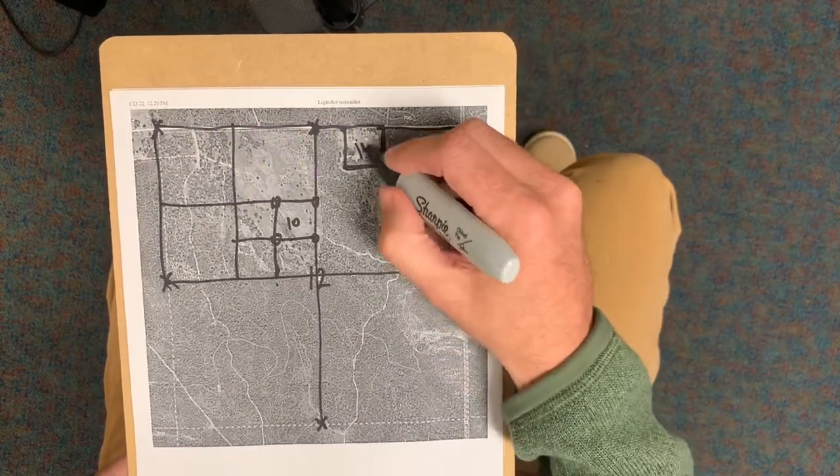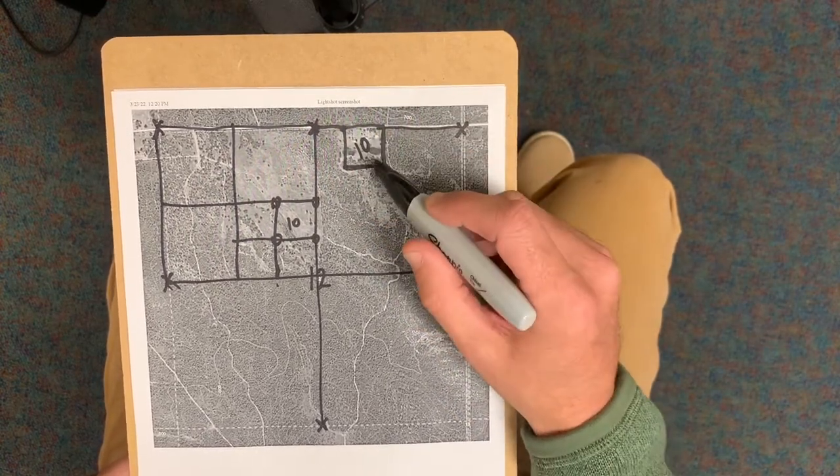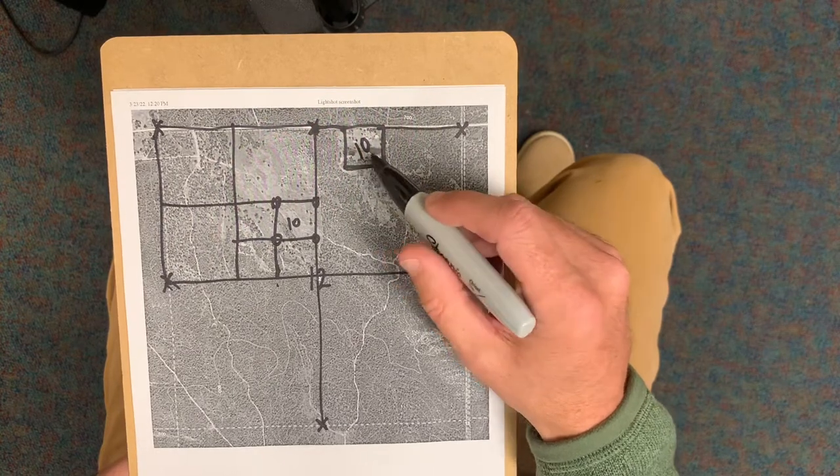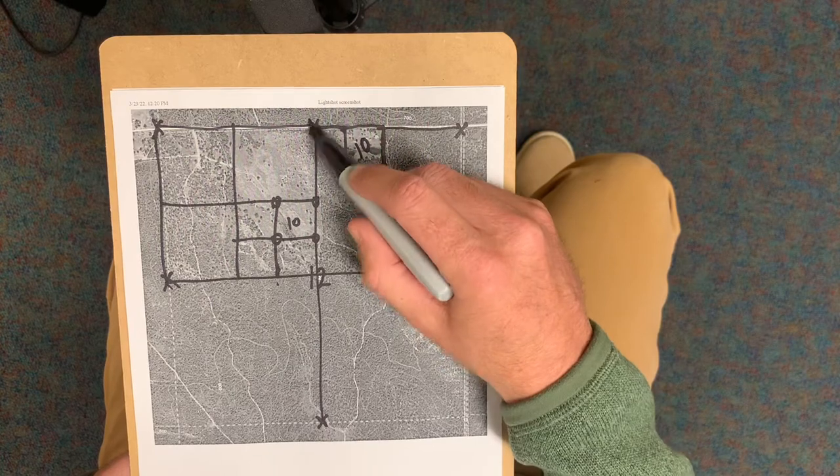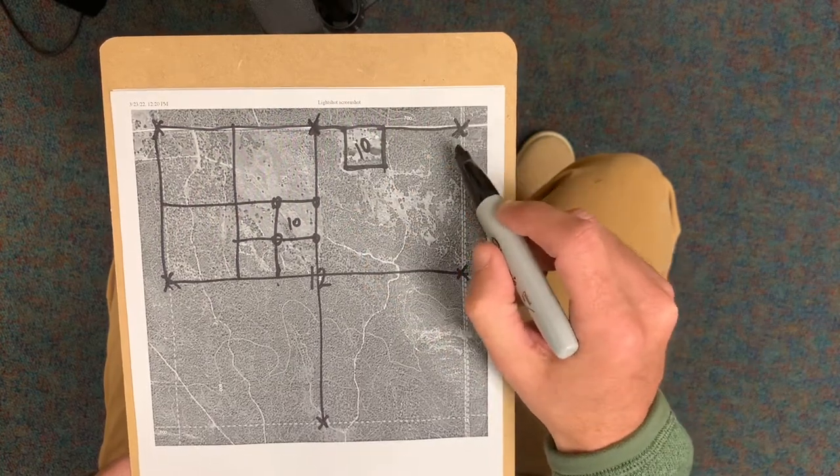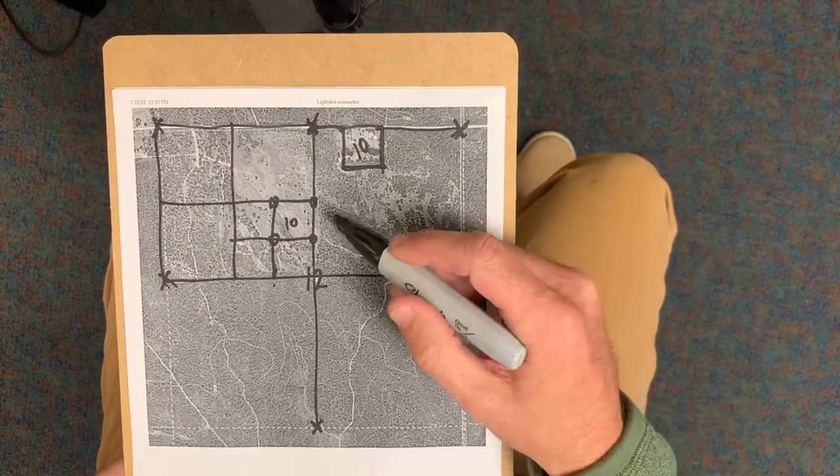Now this other 10 acres right here, its description is more difficult to come up with, but it's less work to survey because it is only dependent upon two controlling corners versus five.